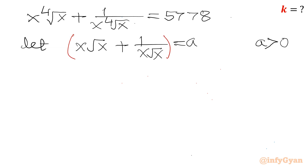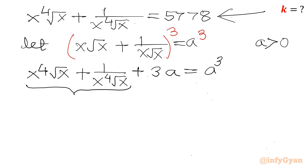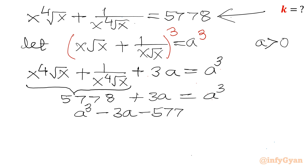Applying the (a+b)³ expansion: (x√x)³ = x^4√x, and (1/(x√x))³ = 1/(x^4√x). The cross term 3ab equals 3, since the product ab = 1. So we get x^4√x + 1/(x^4√x) + 3a = a³. From equation 1, x^4√x + 1/(x^4√x) = 5778, giving 5778 + 3a = a³, or a³ − 3a − 5778 = 0.